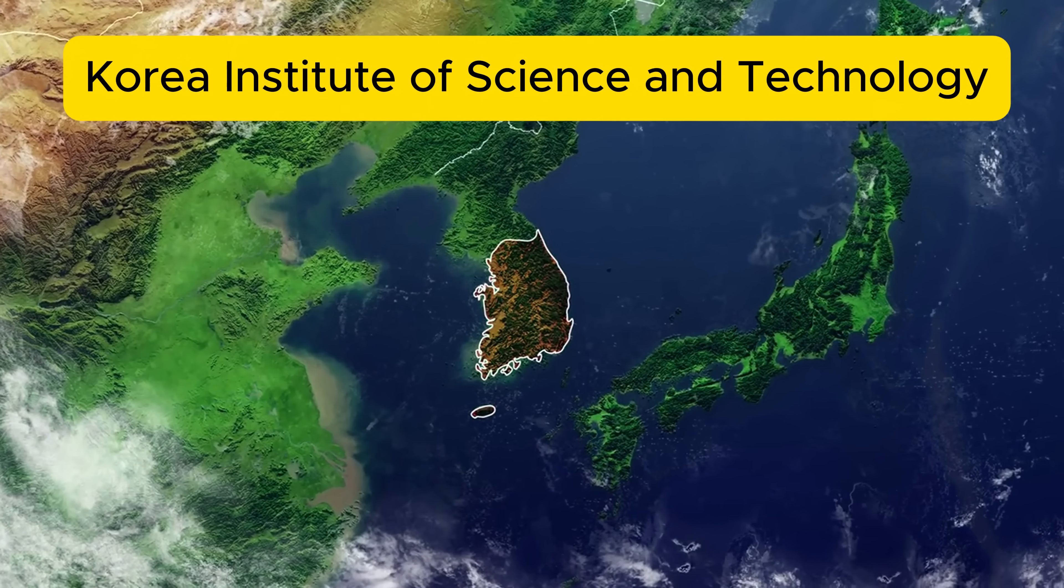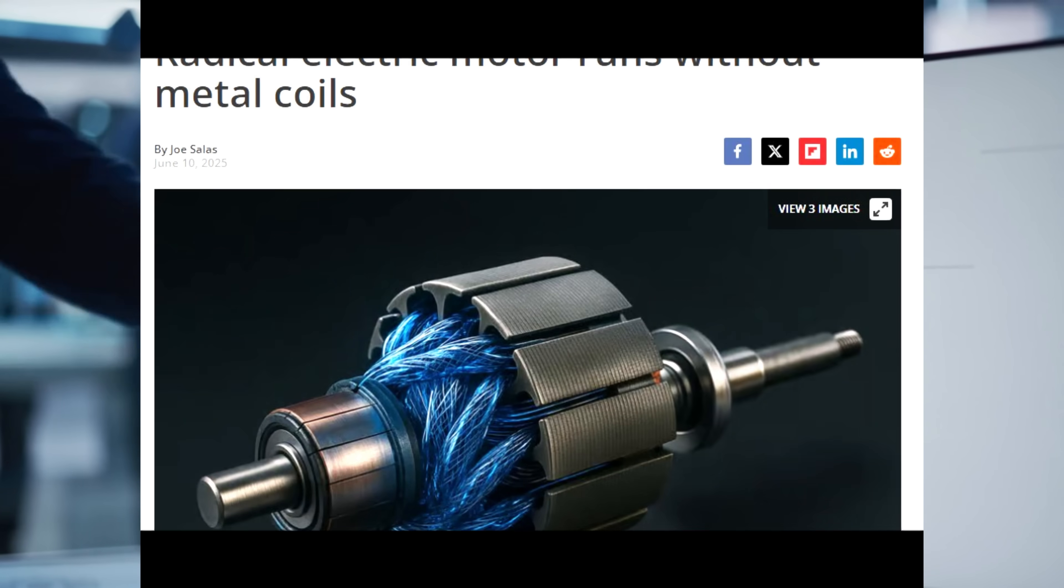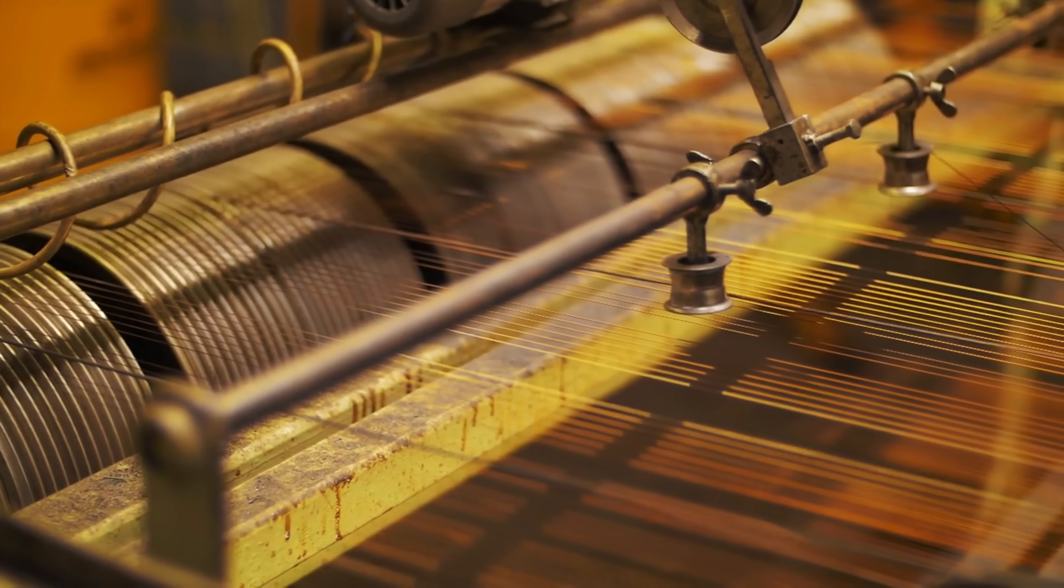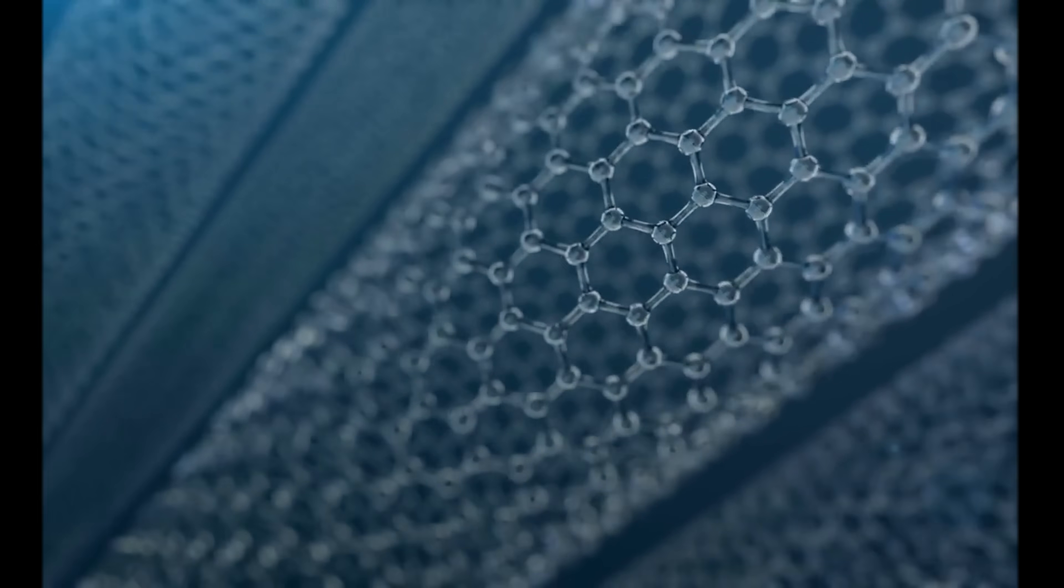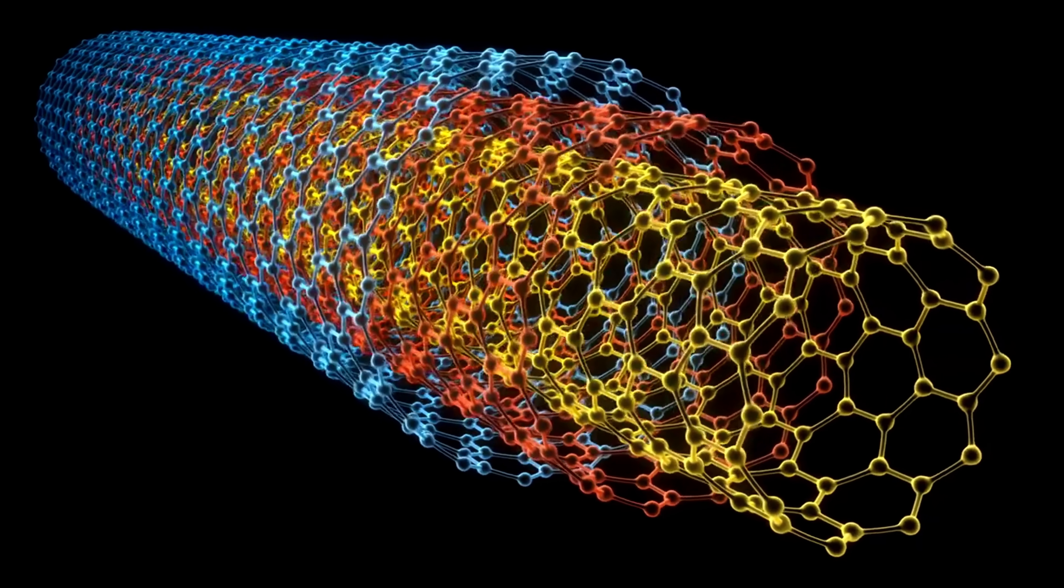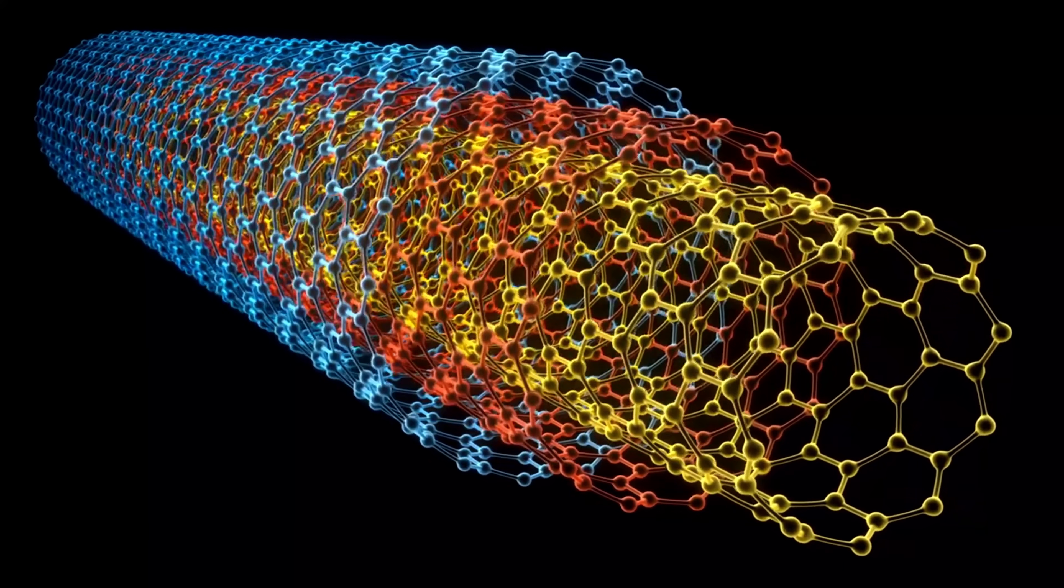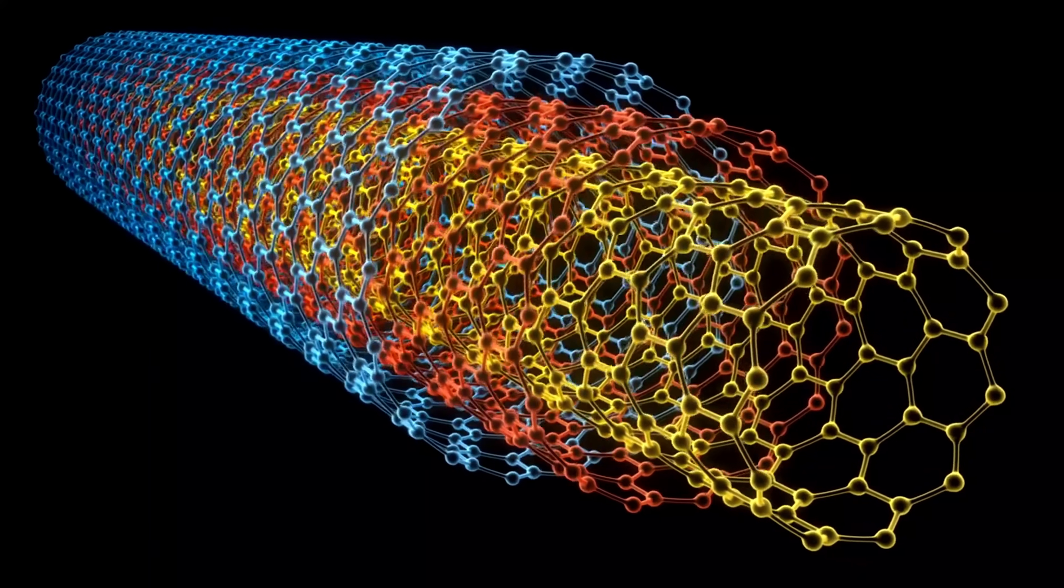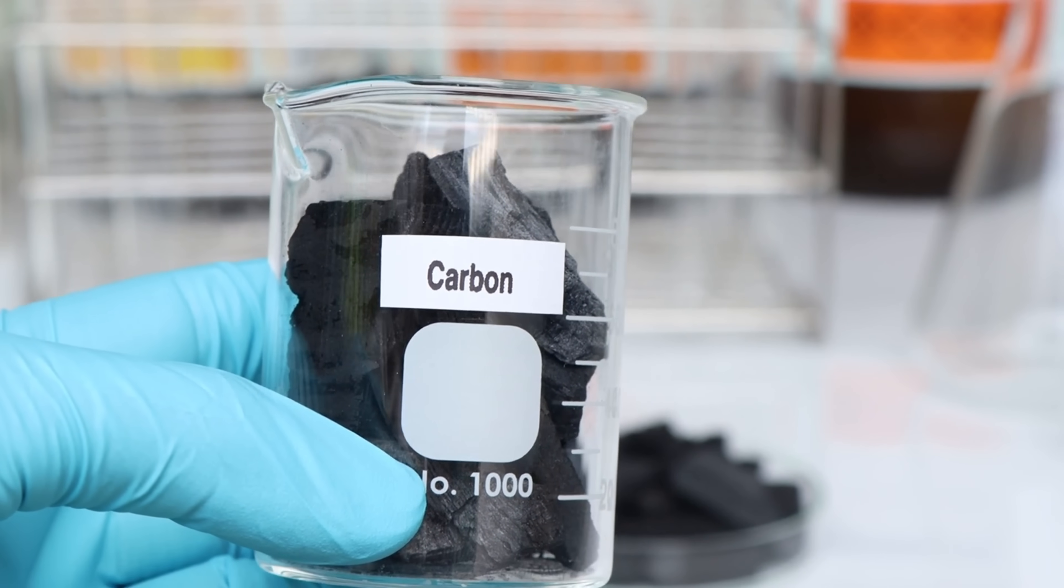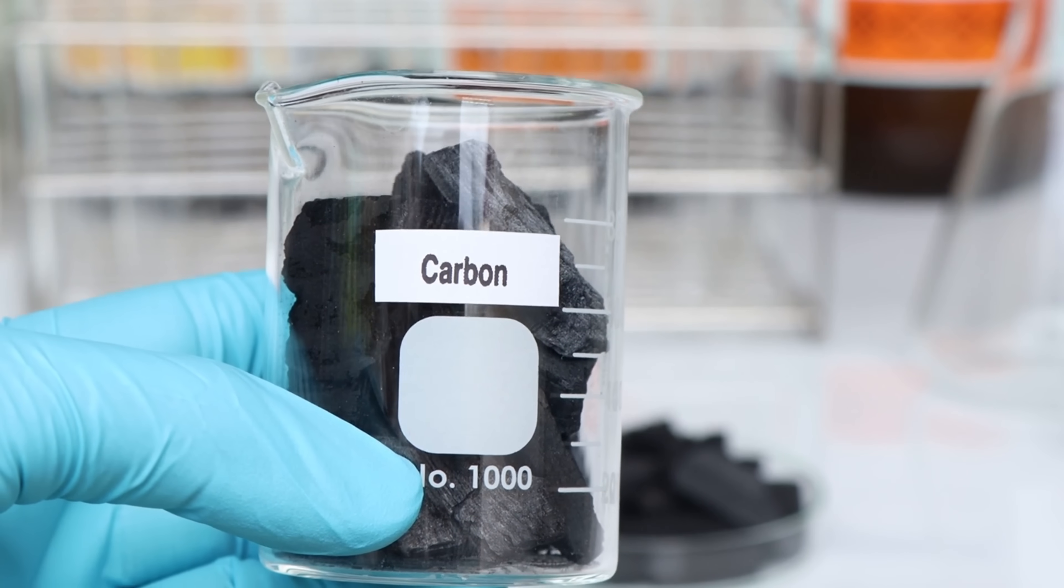Enter the Korea Institute of Science and Technology, or KIST. Researchers there have developed a new form of electrical wiring that does away with copper and aluminum entirely. Instead, they use carbon. Specifically, carbon nanotubes. These are ultra-thin tubes of carbon atoms, thousands of times smaller than a human hair, but with incredible properties. To transform them into usable wiring, the researchers created a process called lyotropic liquid crystal-assisted surface texturing, LAST for short.